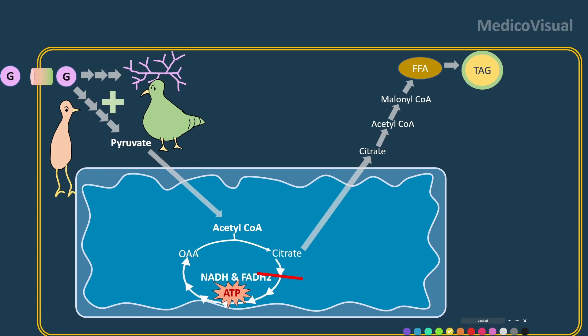They are represented as thin lean birds because these hormones are released in the fasting state when your body is starving, and when your body says: please stop these processes, we need to save glucose — we cannot